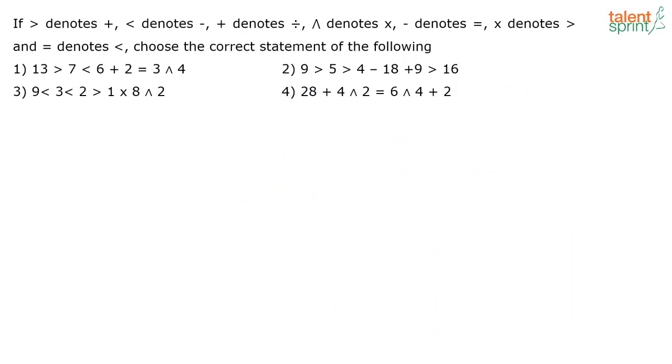2YF3Z. Again, you have to do a trial and error method here to arrive at the answer. Here greater than denotes plus, less than denotes minus, etc. Choose the correct statement of the following. So what will the first option be? The first option will be 13 plus 7 minus 6 plus, denotes what? Divided by 2, equal to denotes less than 3, 4.